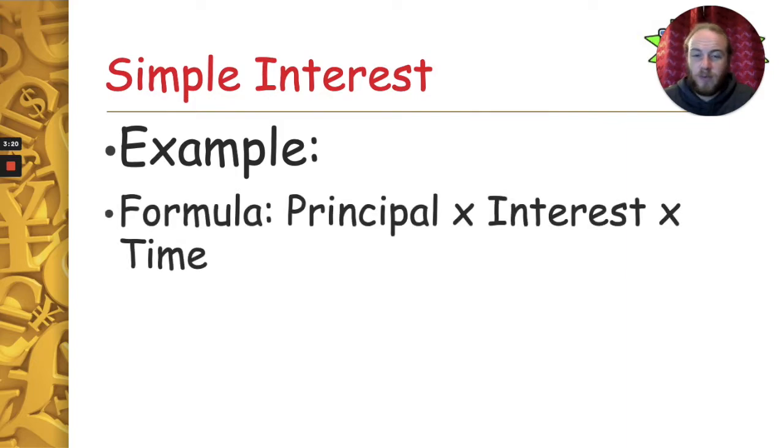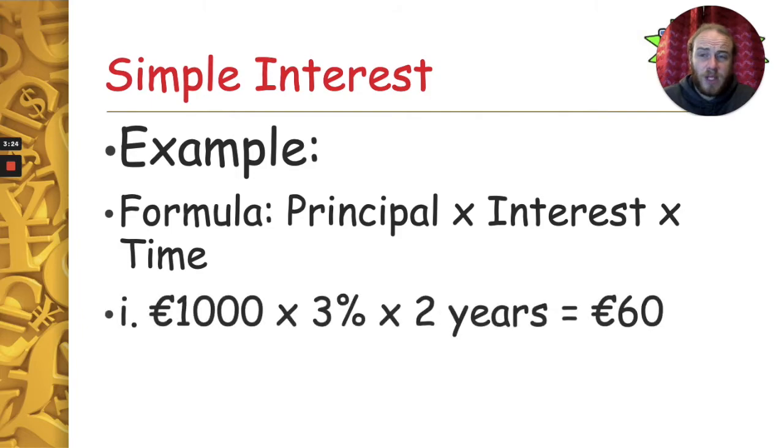So we know our formula is principal times interest times time. In other words, it's a thousand euro multiplied by three percent multiplied by two years. So put that into your calculator and you get 60 euros. The first question asks, how much interest is John going to earn? So what's the extra bit John's going to earn for leaving the money in that account? The answer to that is 60 euro.